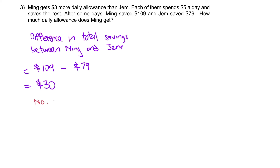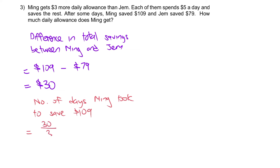Number of days Ming took to save $109: $30 divided by $3 equals 10 days — 10 days to reach the difference of $30.